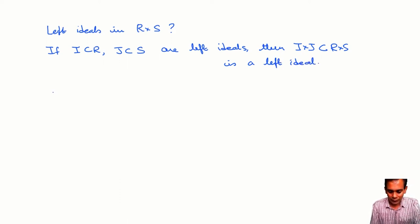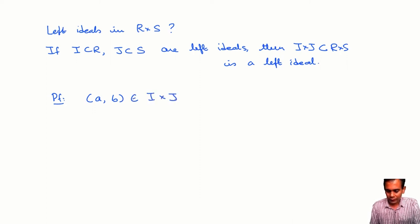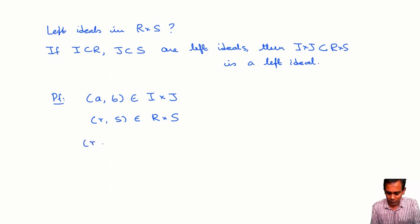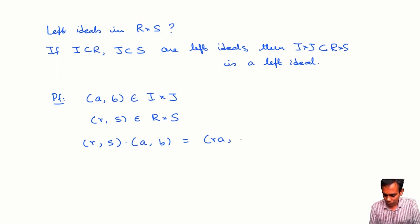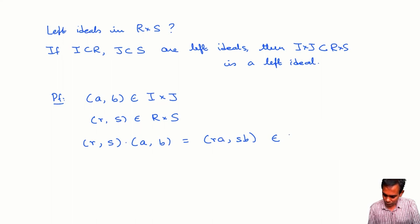The proof is really easy. If (A, B) belongs to I×J and (R, S) belongs to R×S, we need to check that (R, S)·(A, B) belongs to I×J. By definition, (R, S)·(A, B) = (RA, SB). But RA belongs to I because A belongs to I and I is an ideal, and SB belongs to J because B belongs to J and J is an ideal.